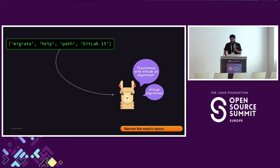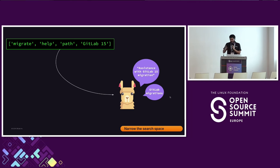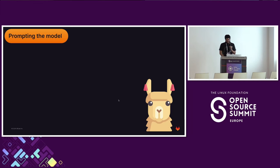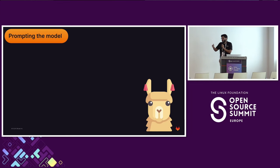We experimented with different verbosity levels. One output using LLaMA 2 was: 'assistance with GitLab 15 migration' — which is cooler to read than just 'migrate help path GitLab 15.' When used for fine-tuning topic modeling, the topic label 'GitLab migrations' is easier to read and put in a table for others to consume. We used LLaMA 2 because we didn't need the largest and greatest model — since we already narrowed the search space, we don't need all that compute power, and we wanted to keep costs low and inference time shorter.